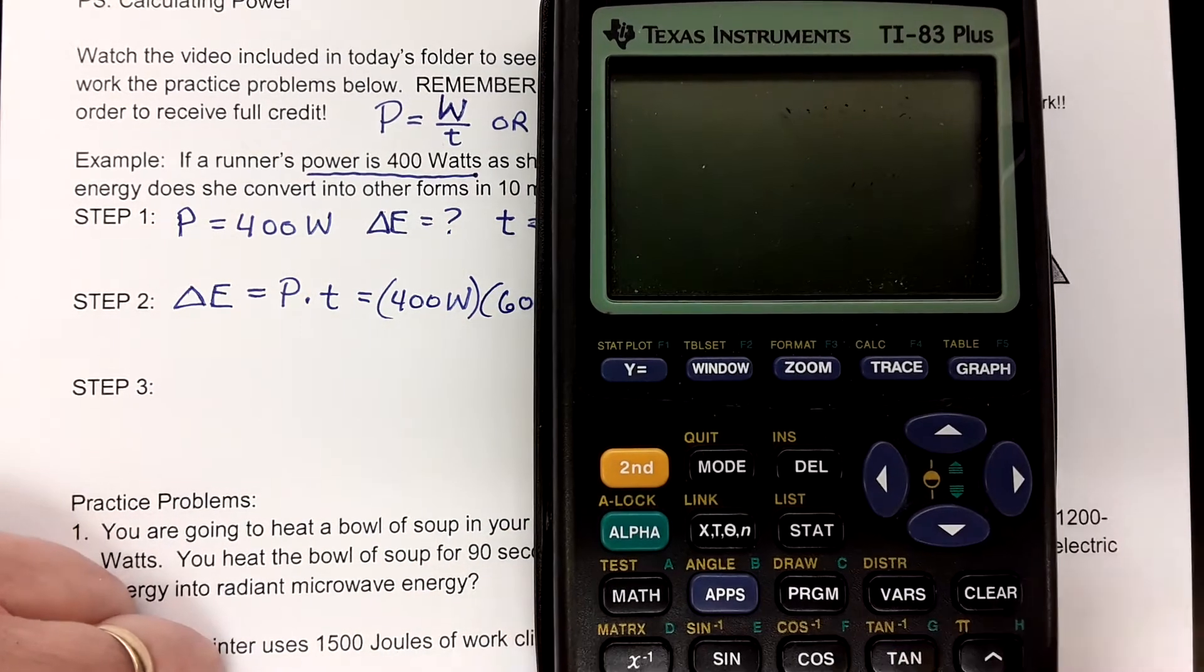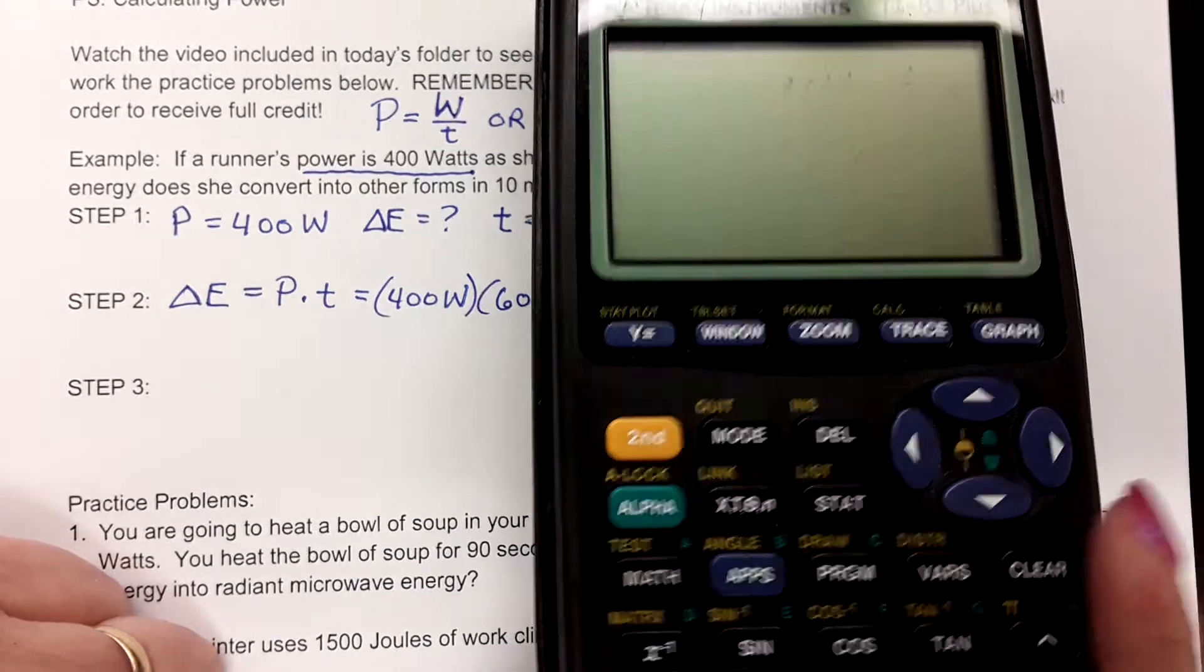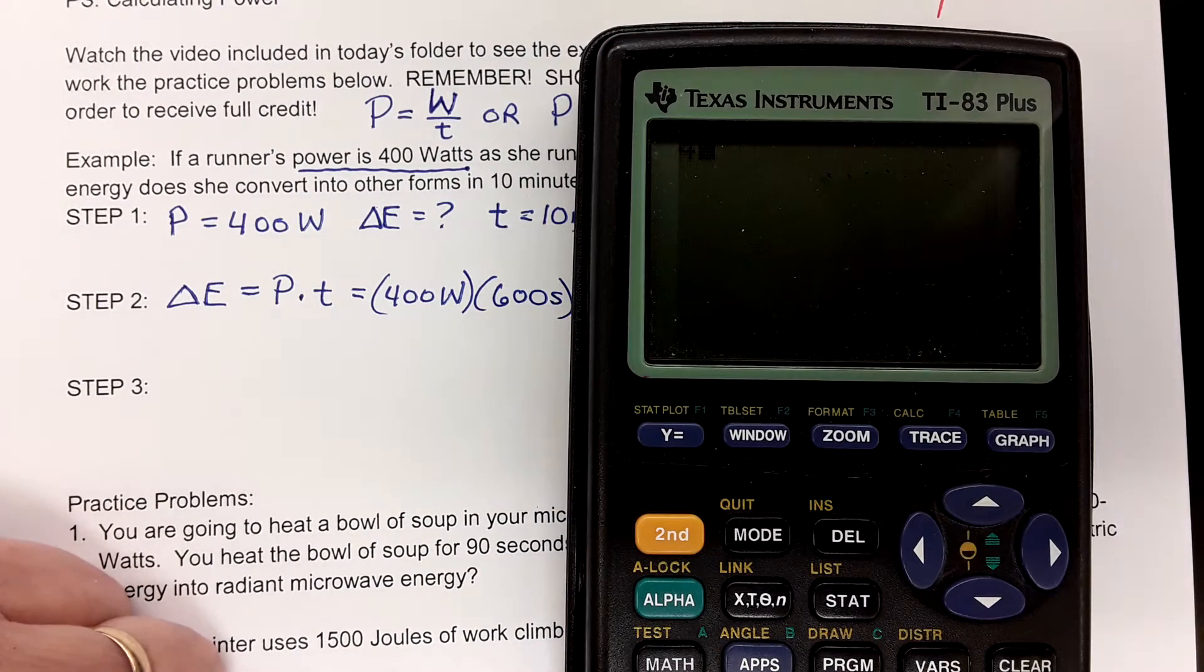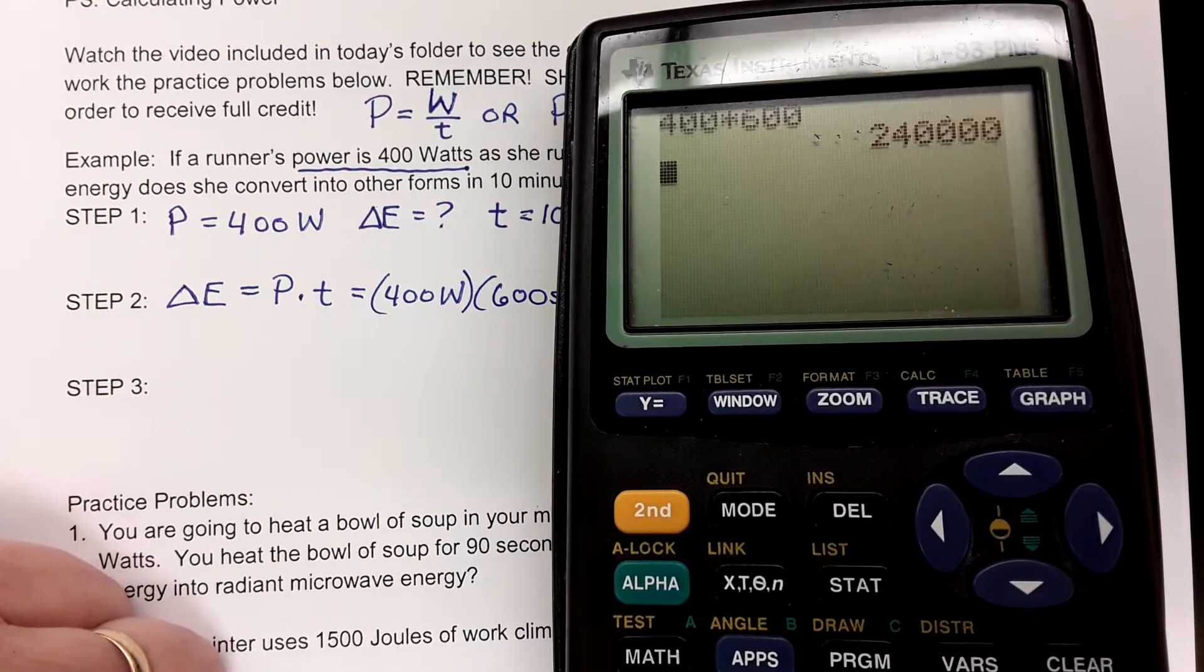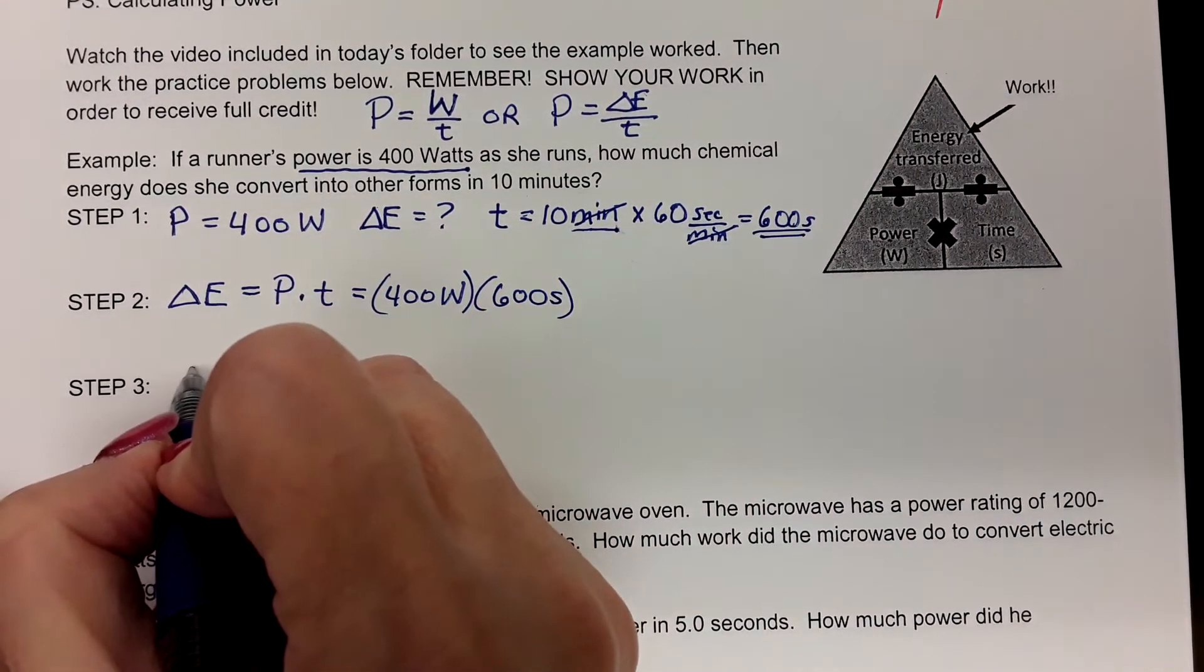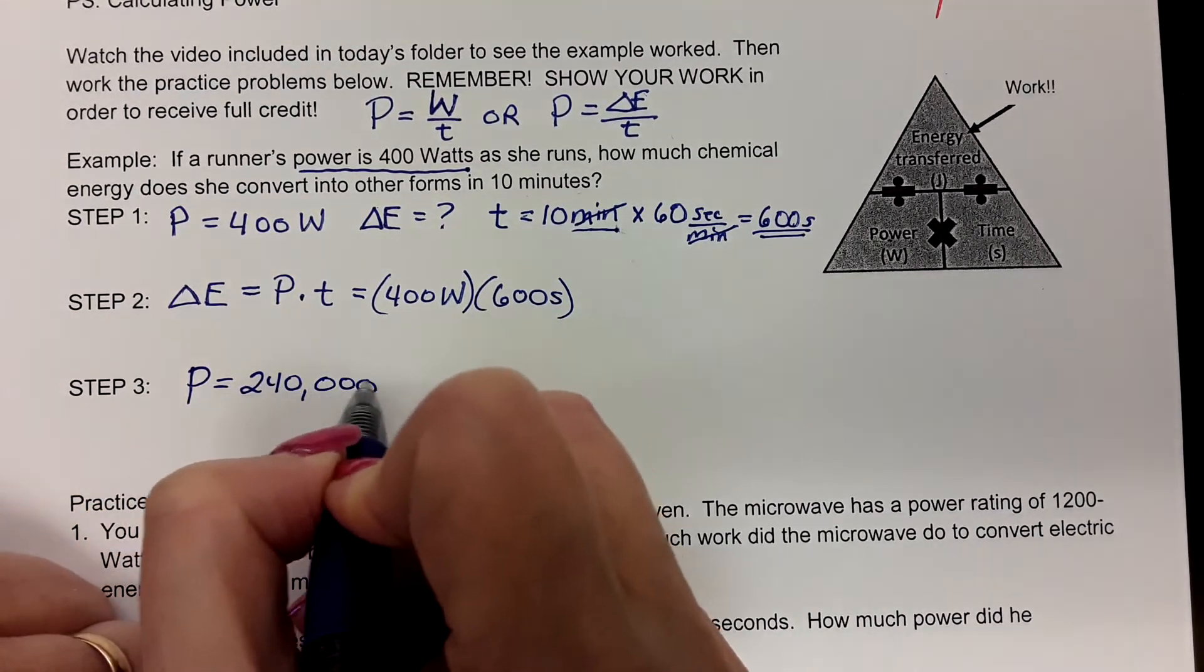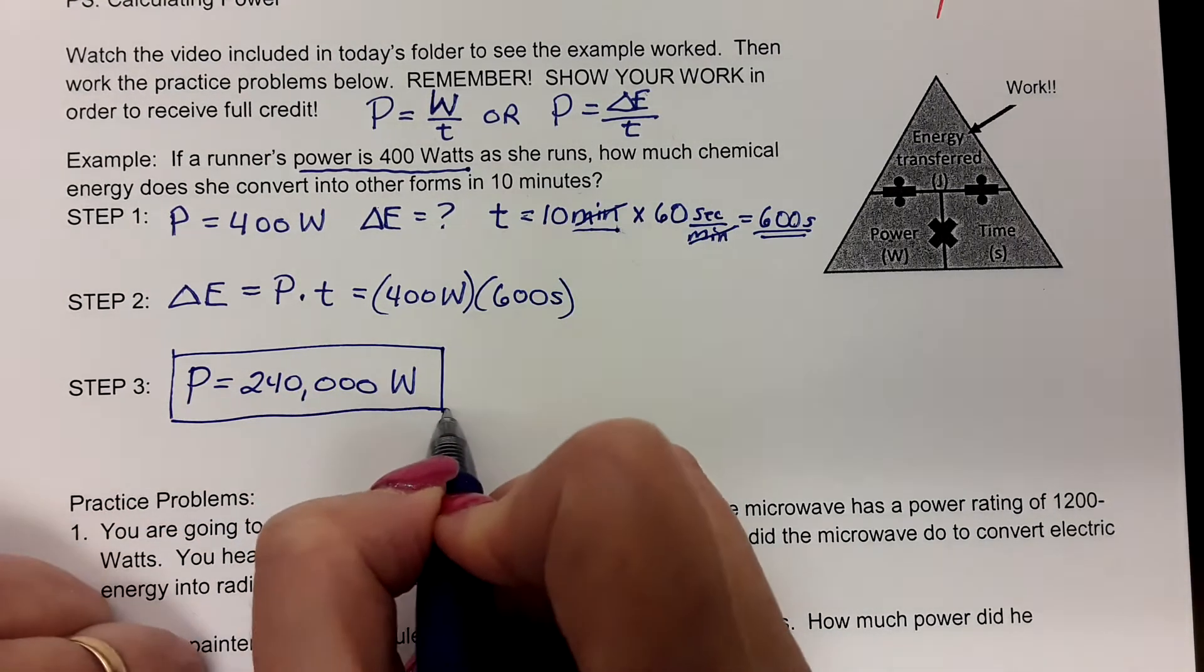So we come over here to the calculator, and we're going to say 400 times 600, enter. I guess I've got to turn it on first, don't I? There we go. Okay, 400 times 600, enter. Oh, there we go. 240,000. All right. So that's going to be 240,000 watts of power generated as she runs.